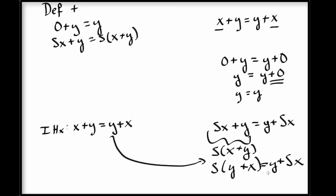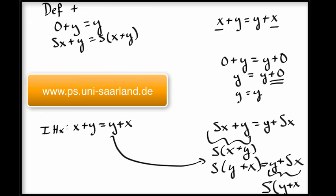Now if we rewrite with this lemma, the right hand side becomes successor of y plus x as we want. And now we're done with the proof of commutativity of addition.